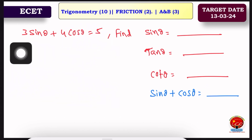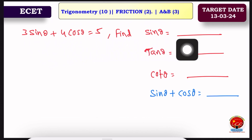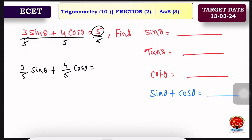Let's start with the first question: 3 sinθ + 4 cosθ = 5. Find sinθ + cosθ. We will discuss this concept. Since the total equals 5, we divide the entire equation by 5. So we get (3/5) sinθ + (4/5) cosθ = 1.